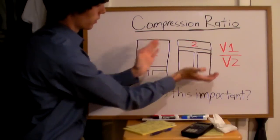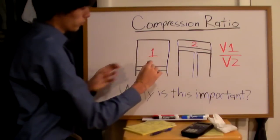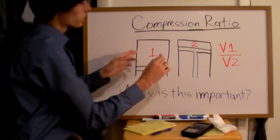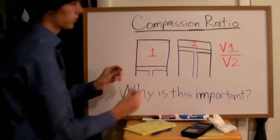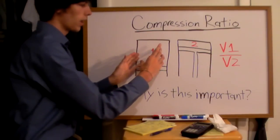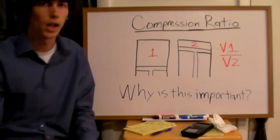Now as this moves up it compresses the air in here and now you've got a different volume. The compression ratio is a ratio of the volume in step one over the volume in step two. Say there's eight times as much space in here as there is in here then you'd have a compression ratio of eight to one.